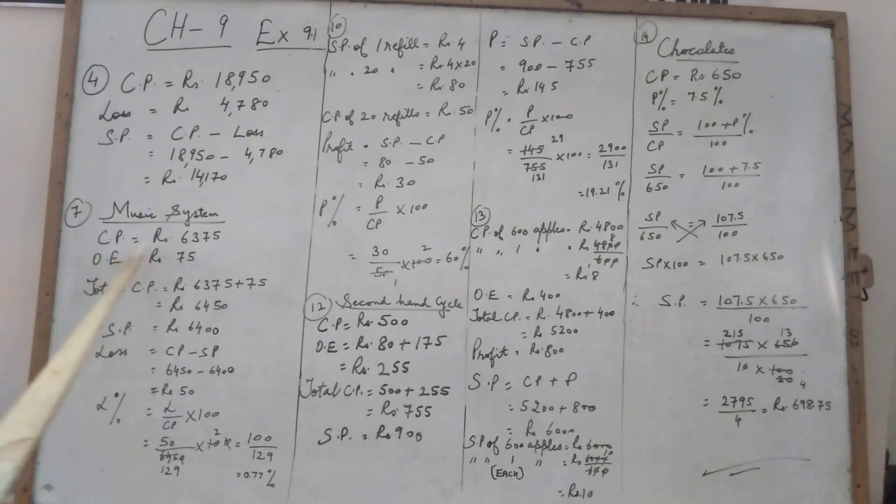Now see the board, cost price is Rs. 6,375. Overhead expenses, that is the transportation expense is Rs. 75. I have told you in my first video that every time overhead expenses is added in the cost price. Total cost price is, add up these two, we will get Rs. 6,450.